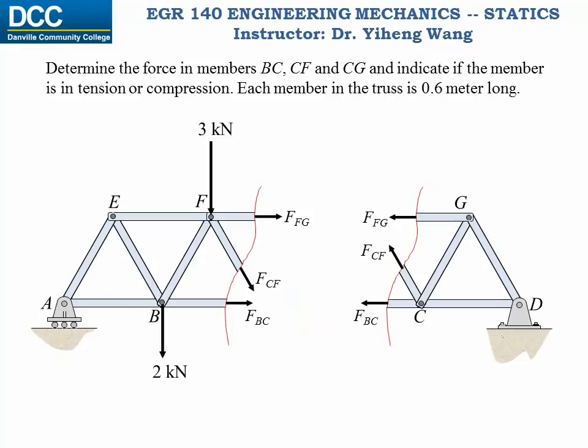Now the internal forces in these three members are exposed. Note how there are actions and reactions on the left and right segments, so we can choose either side for the calculation and we will get the same results. We can only solve for three unknowns using one rigid body free body diagram. The left segment has only one support reaction associated with a roller, while the right segment has two support reactions associated with a pin. So for convenience, we should pick the left segment for further analysis.